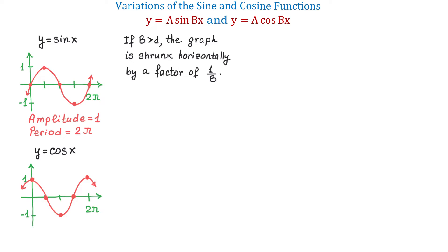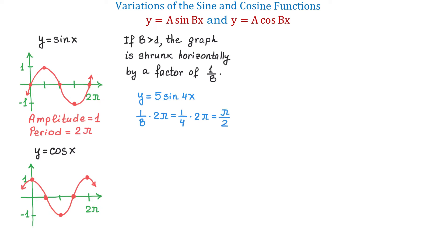For example, let's consider the function y equals 5 sine of 4x. In this function b equals 4, and to find the period we will multiply 1 over b by 2 pi. Then 1 over b multiplied by 2 pi equals 1 over 4 multiplied by 2 pi, which is pi over 2. So the period of this function is pi over 2.